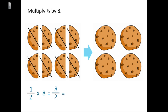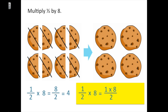Eight halves is the same as four. Mathematically, one-half times eight is the same as one times eight-halves — we're multiplying the numerators. One times eight equals eight, and I keep two in the denominator's place: eight halves. Finally, I simplify: eight halves equals four.